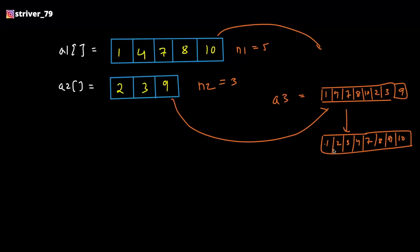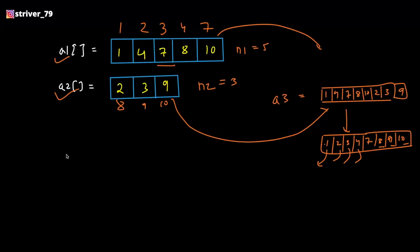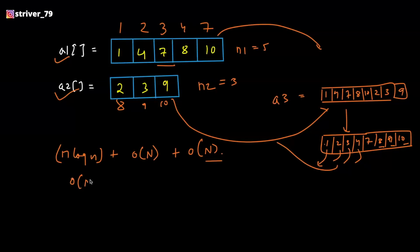Once you have the sorted array, you take out the first element and place it in the first array, then the second, third, fourth, and fifth elements likewise. After this, you have 8, 9, 10, but the first array is filled up, so you plug 8, 9, 10 into the second array. In this way, you can merge two sorted arrays.